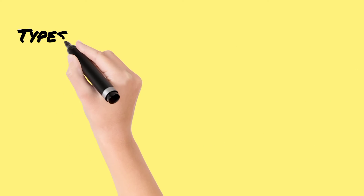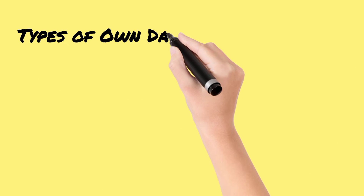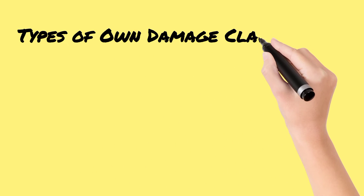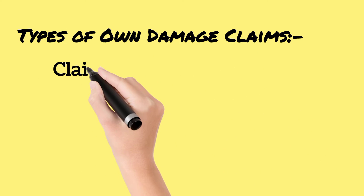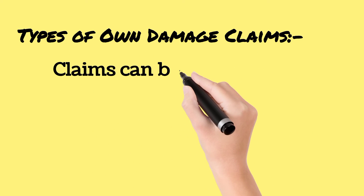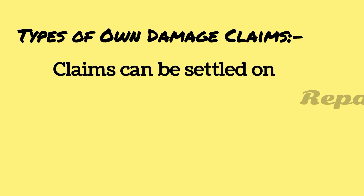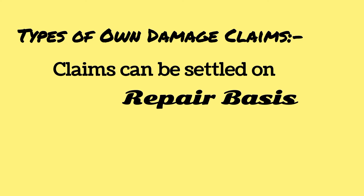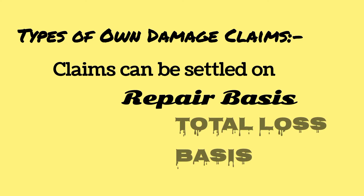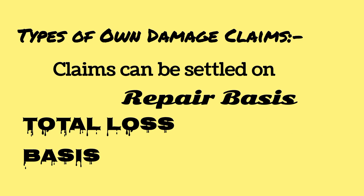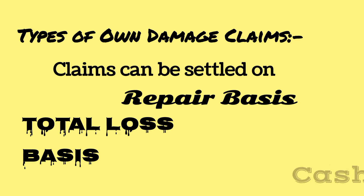Types of own damage claims: A claim can be settled on a repair basis, total loss basis, or cash loss basis.